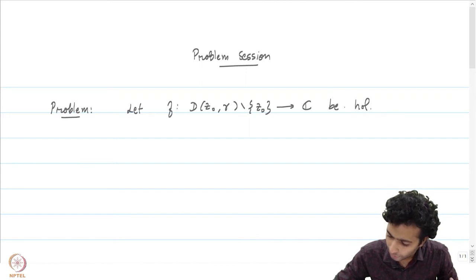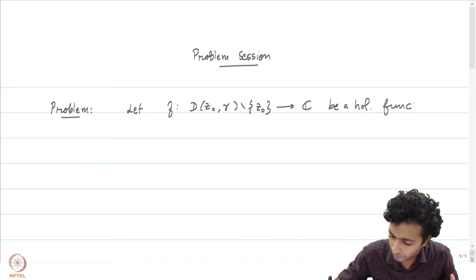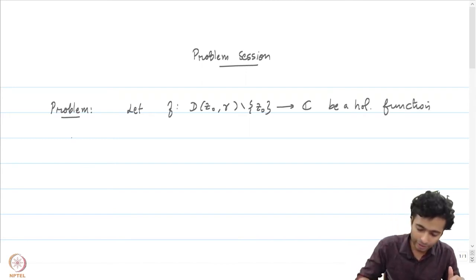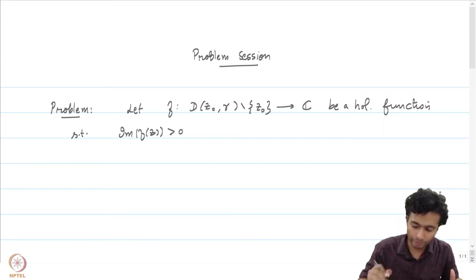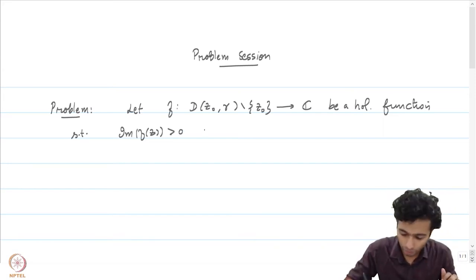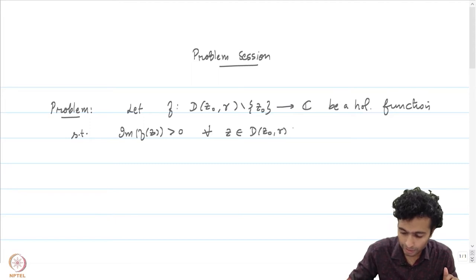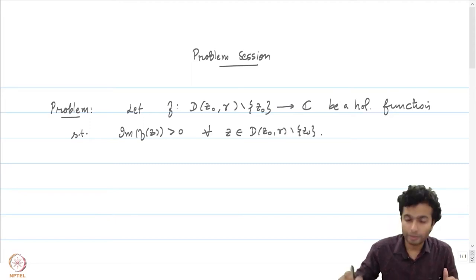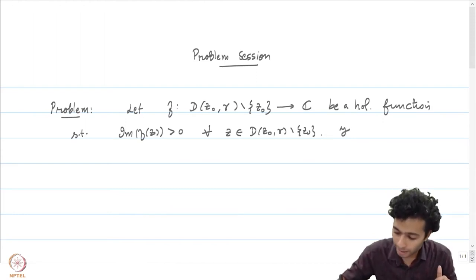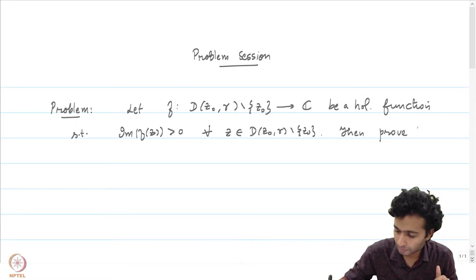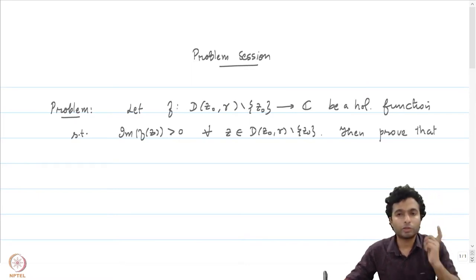We have a holomorphic function which satisfies the condition such that the imaginary part of f(z) is greater than 0. Suppose for all z in the punctured disk D(z₀, r) minus {z₀}, we have the imaginary part of f(z) is greater than 0. Then prove that z₀ is a removable singularity.